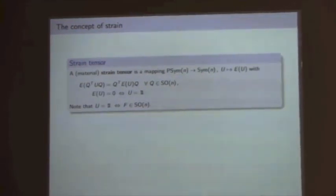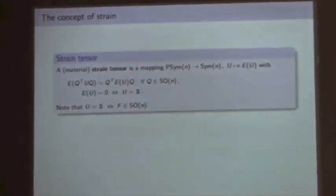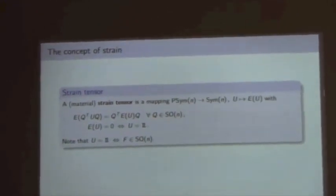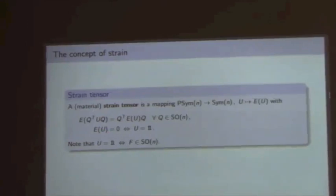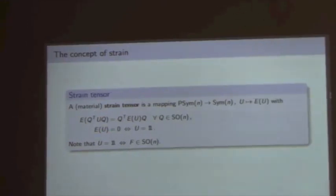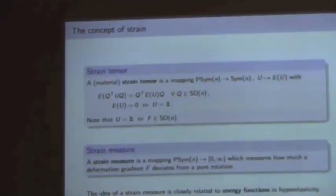Extremely important in elasticity theory is the concept of strain. The idea behind strain is to measure only the non-rotational part of the deformation gradient. A material strain tensor is simply a mapping from U, the right Biot stretch tensor, into the symmetric matrices, such that the strain tensor is coaxial to U and vanishes if and only if U is the identity, which is the case if and only if F is a pure rotation.